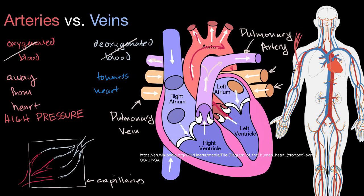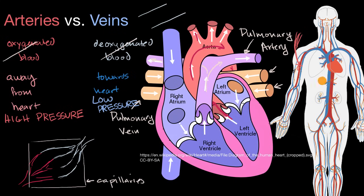If arteries are high pressure, veins are low pressure. One way to think about it: the blood in arteries is pumped directly by the heart, but once it goes through the capillaries and comes back through the veins, it's sluggishly making its way back — it's not being directly pumped. That's why veins have valves, to ensure that blood moves in one direction. I'll draw blood in the veins as red, just so we don't perpetuate the misconception that blood in veins is somehow blue.